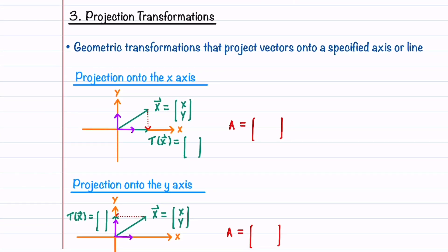The next set of transformations are projection transformations — geometric transformations that project vectors onto a specified axis or line. When we project vectors onto the x-axis, a vector x becomes T of x equal to (x, 0). E1 remains the same as T of E1, and E2 projects down to the origin as T of E2. Our standard matrix A contains (1, 0) as T of E1 and (0, 0) as T of E2, giving [[1, 0], [0, 0]].